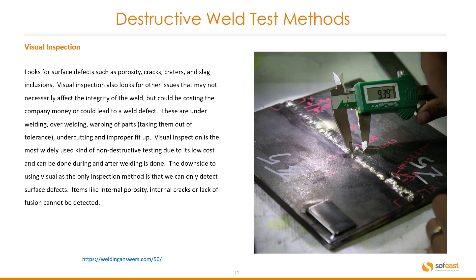Visual inspection looks for surface defects such as porosity, cracks, craters, and slag inclusions. It also looks for other issues that may not necessarily affect the integrity of the weld but could be costing the company money or could lead to weld defects — these include under welding, over welding, warping of parts, tolerance issues, undercutting, and improper fit-up. Visual inspection is the most widely used kind of non-destructive testing due to its low cost and can be done during and after welding. The downside is that it can only detect surface defects; items like internal porosity, internal cracks, or lack of fusion cannot be detected.